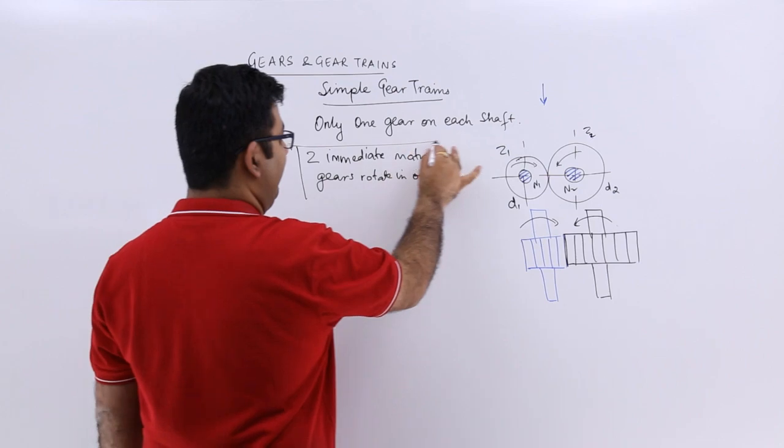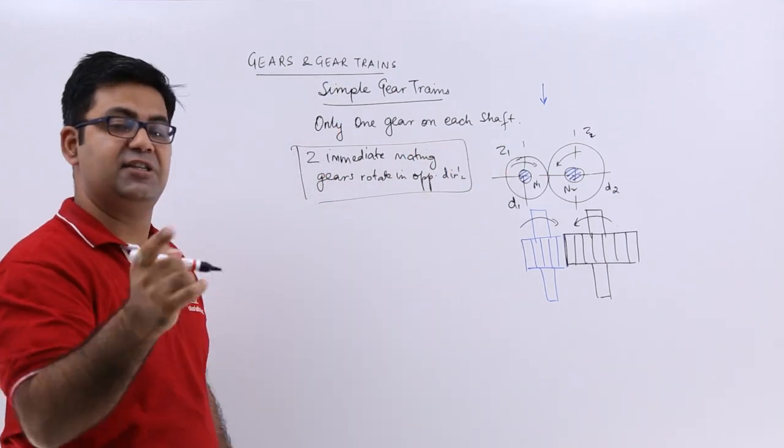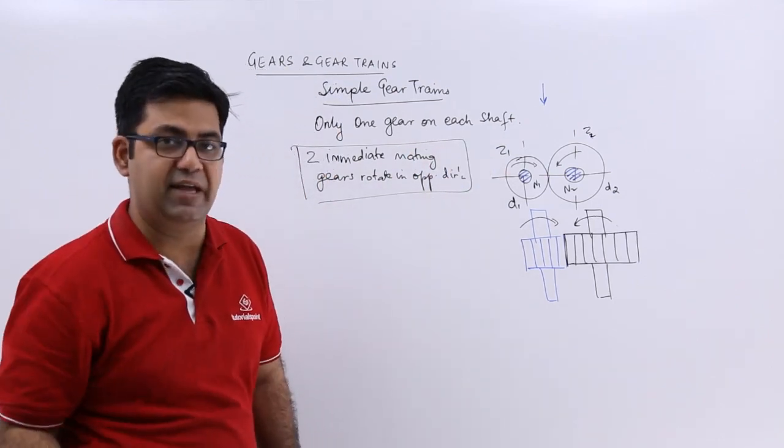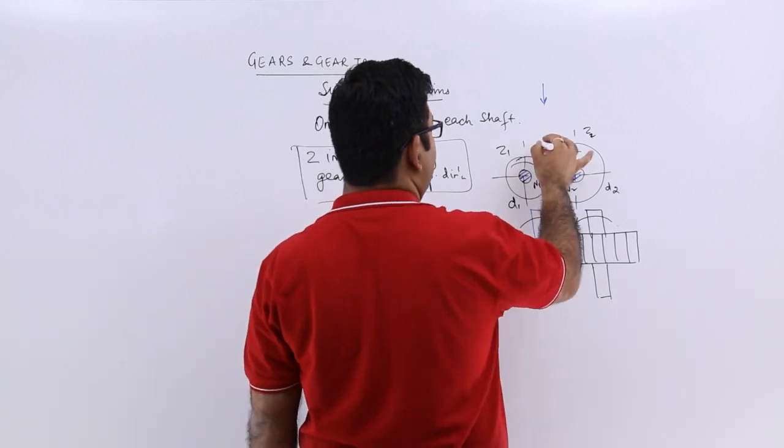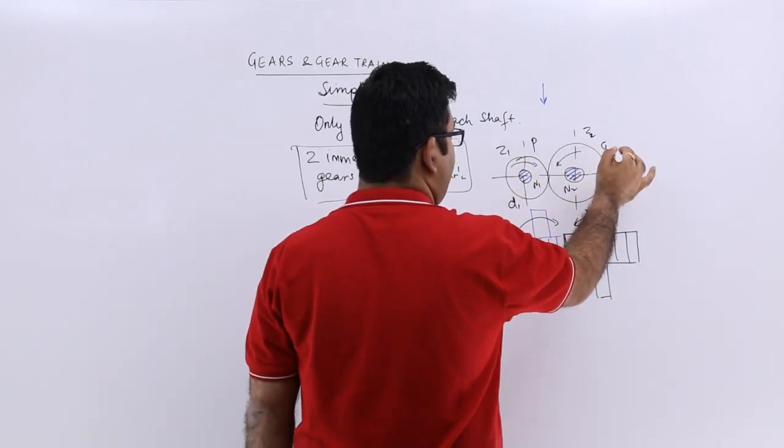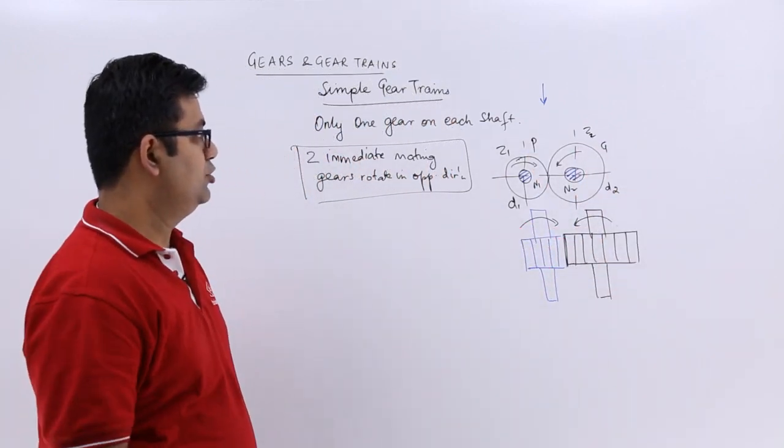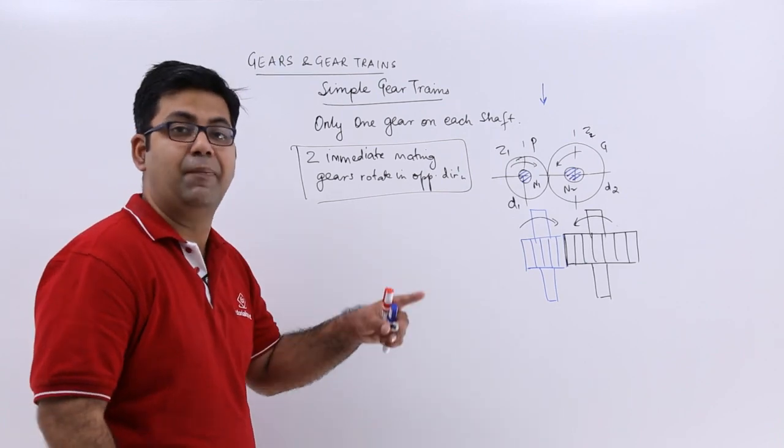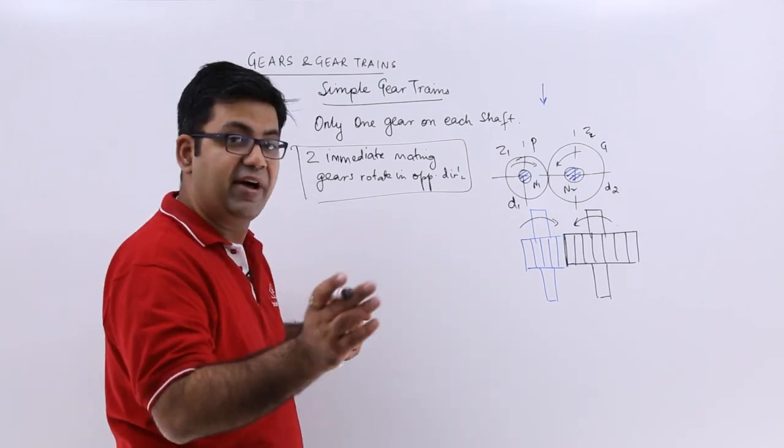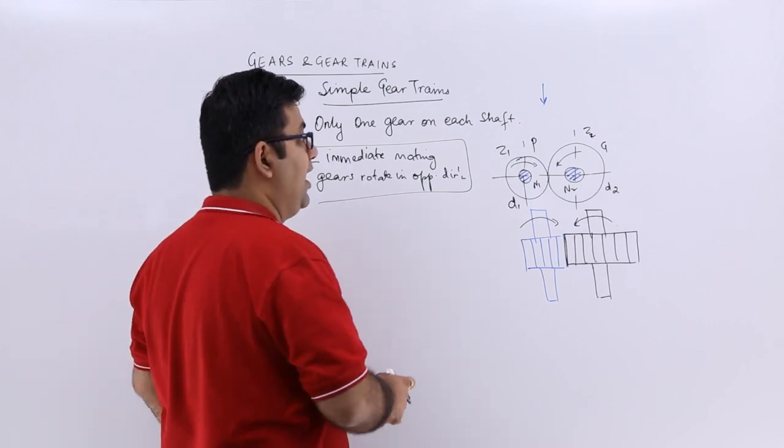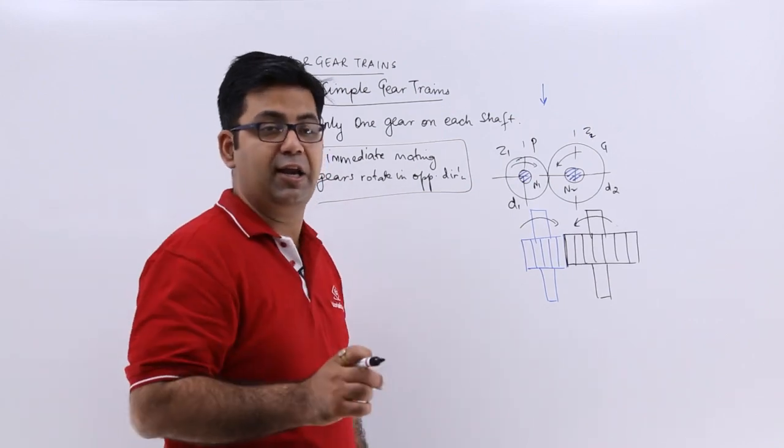If you have to keep the directions of the driver and the driven same, because let's say this is the pinion and this is the gear, the driver and the driven have opposite rotational directions. If I need them to be in the same direction, I will put one idle gear in between.